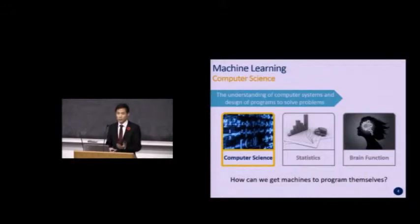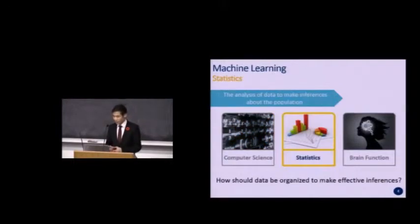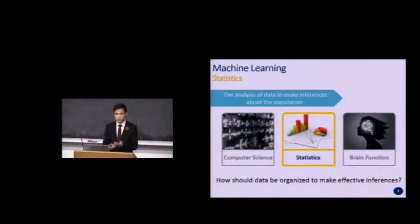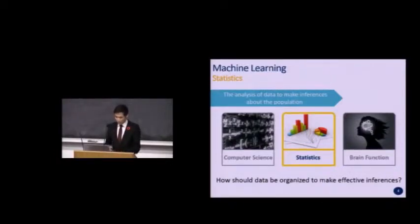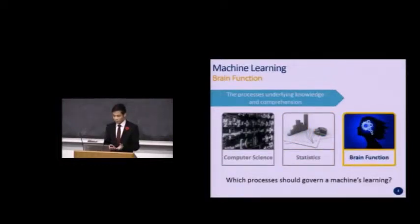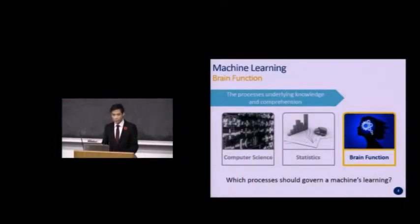In machine learning, we change this definition to how we can get machines to program themselves. The study of statistics looks at how data can be analyzed and modeled to draw inferences from the population. In machine learning, the focus is on applying statistical models with an emphasis on organizing data to draw the most useful inferences. In brain function, we look at which processes underlie knowledge and comprehension, and how we can put those processes into a machine setting to design computers that learn on their own.